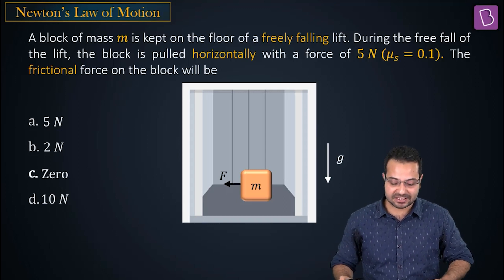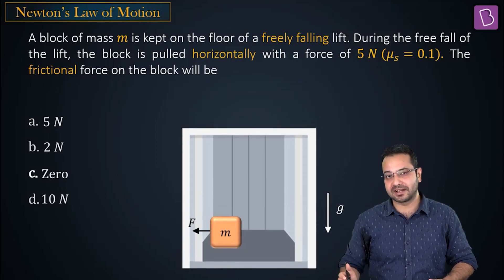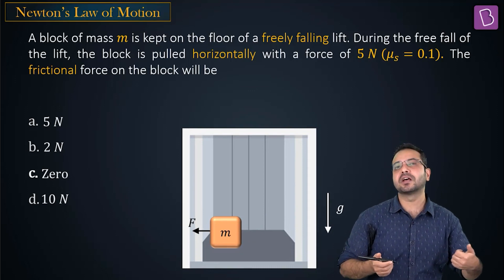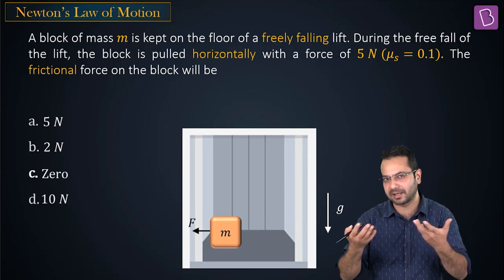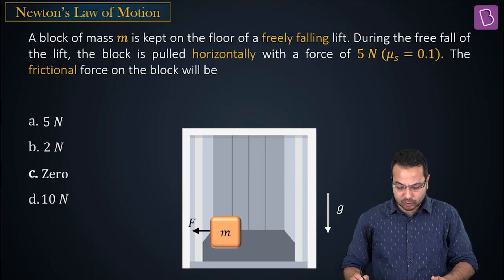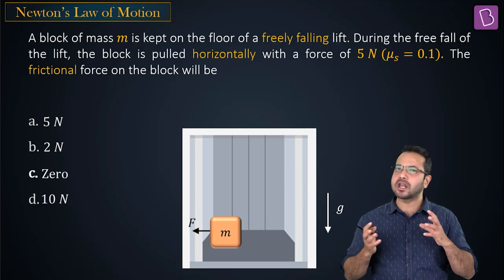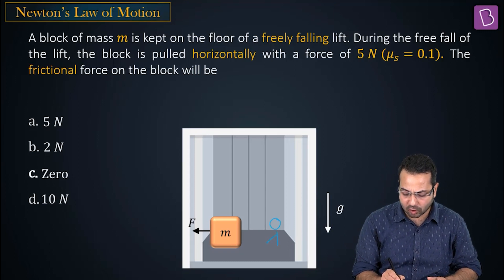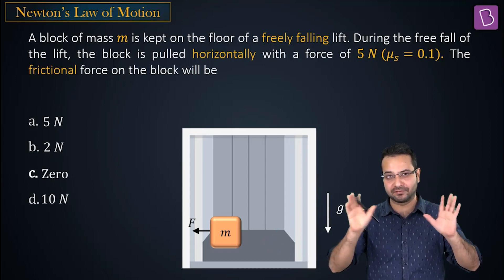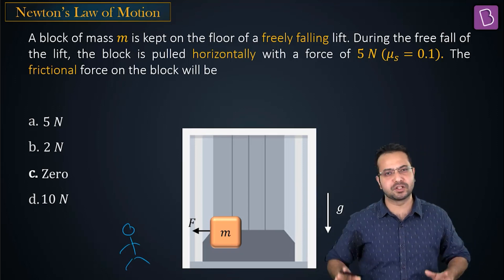The elevator is going to accelerate downward with acceleration g because it is in free fall, and something is applying a force F toward the left on the block. We need to find friction. We can get into the frame of the elevator, but let's analyze it from the ground frame instead.